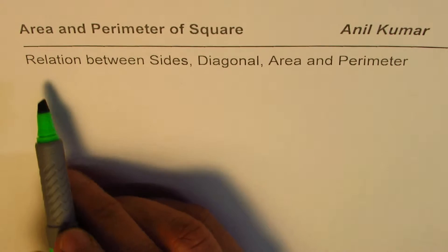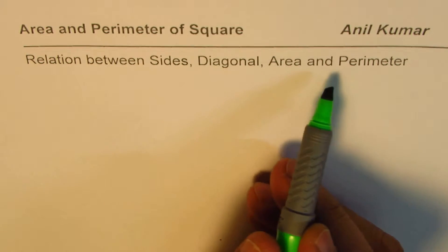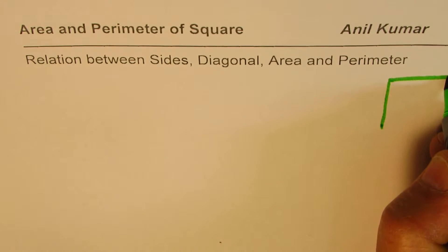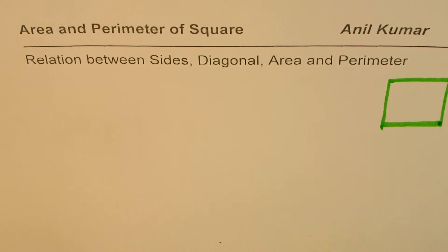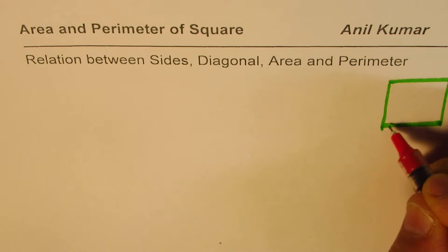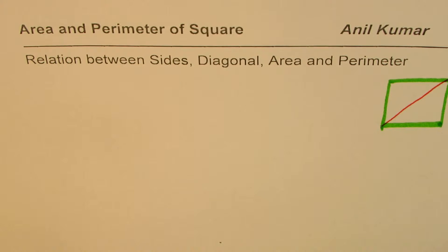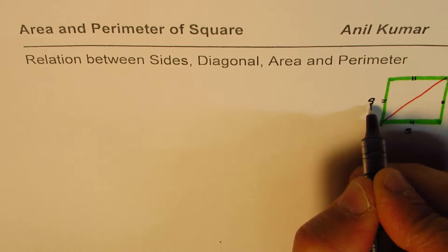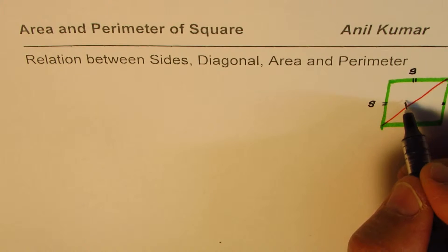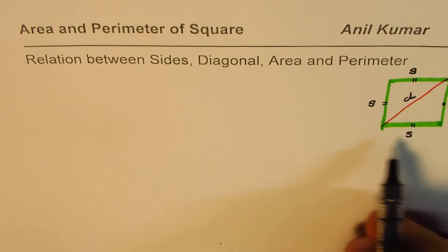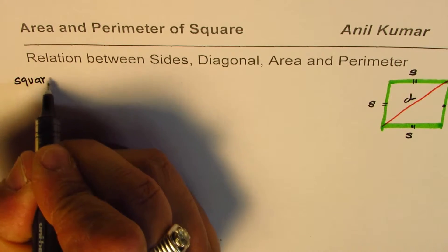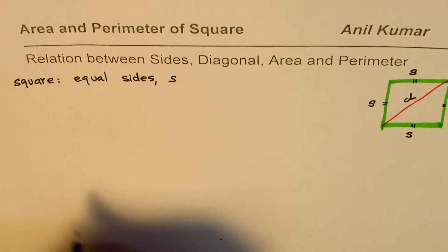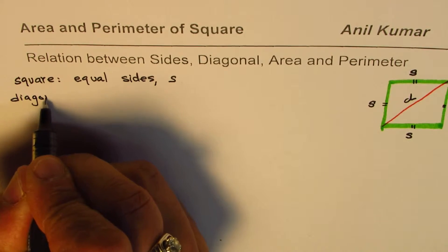The question here is: we need to find a relation between sides, diagonals, area, and perimeter of a square. Let's sketch one square. All sides of the square are equal, so let me draw a diagonal as well. We'll call these sides S and the diagonal D. So a square has four equal sides S and a diagonal D.